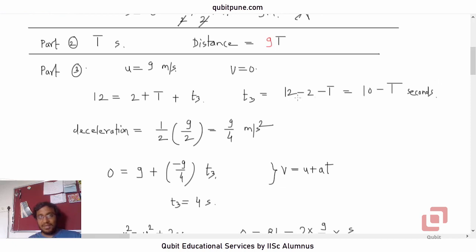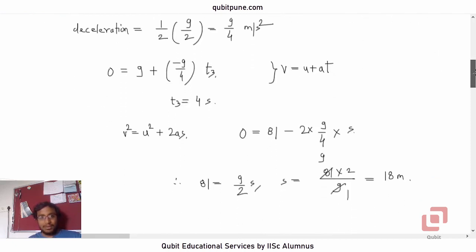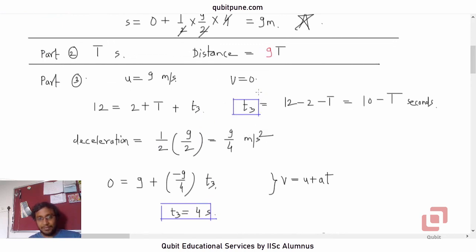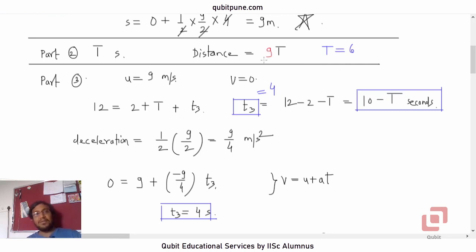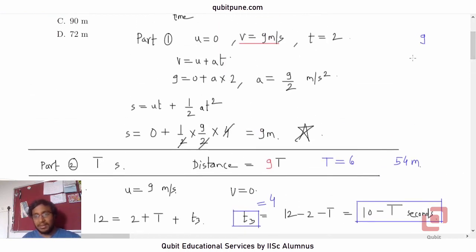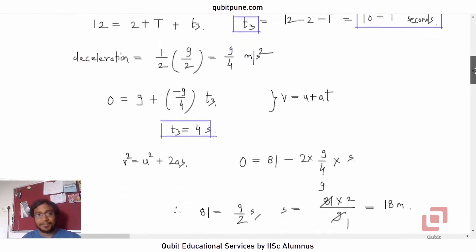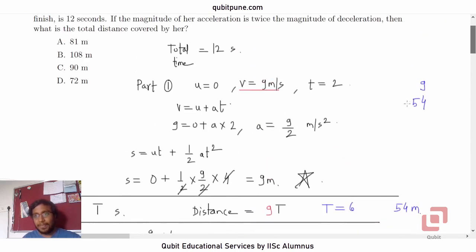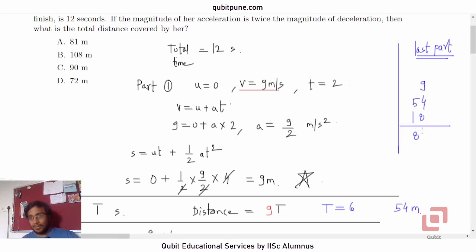Using 10 − T = t3, and since t3 is 4 seconds, we get T = 6 seconds. So the distance covered in the second part is 9 × 6 = 54 meters. We now add all three distances: 9 meters (part 1), plus 54 meters (part 2), plus 18 meters (part 3) — that gives 9 + 18 = 27, plus 54 = 81 meters.